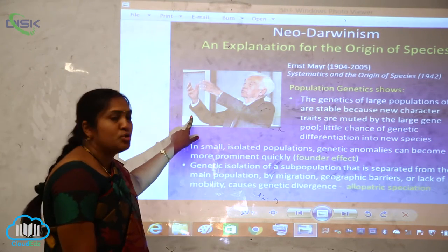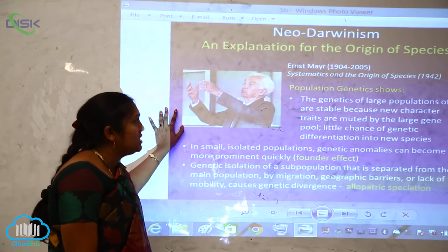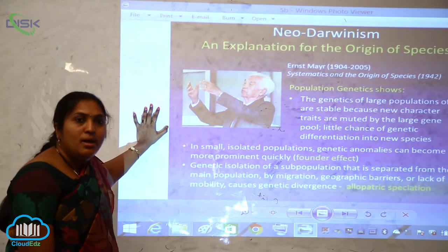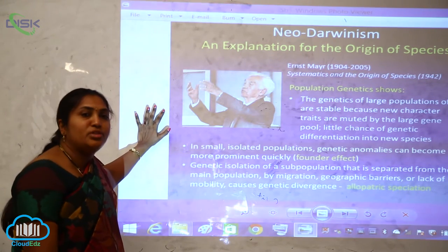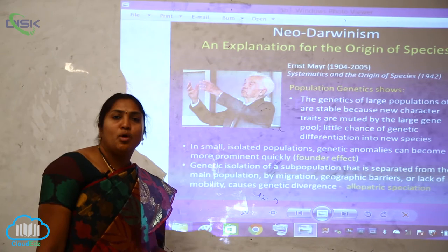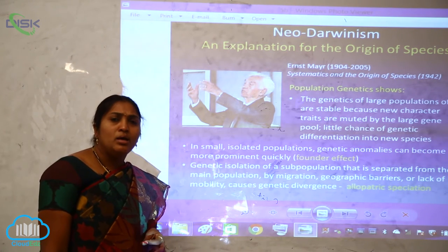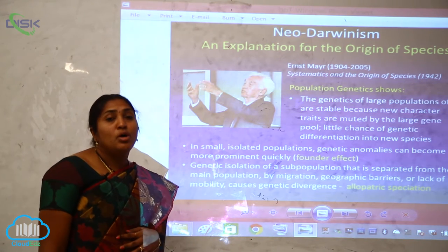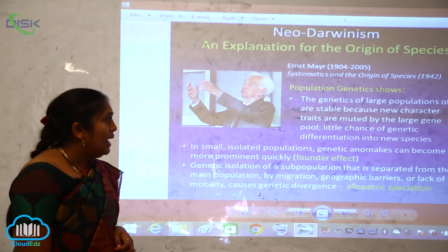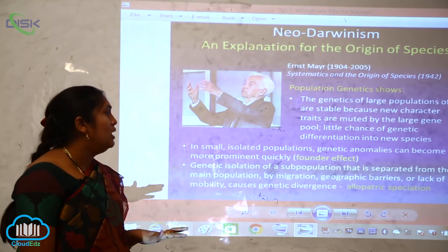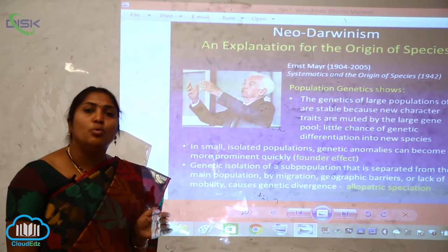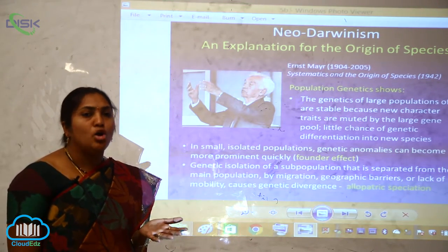Neo-Darwinism explains the origin of species. Ernst Mayr (1904–2005), through his work on systematics and the origin of species, contributed to population genetics. Large populations are genetically stable because new character traits are diluted by the large gene pool, leaving little chance of genetic differentiation into new species. Variations are seen only in small isolated populations, where genetic anomalies can become more prominent and quicker.